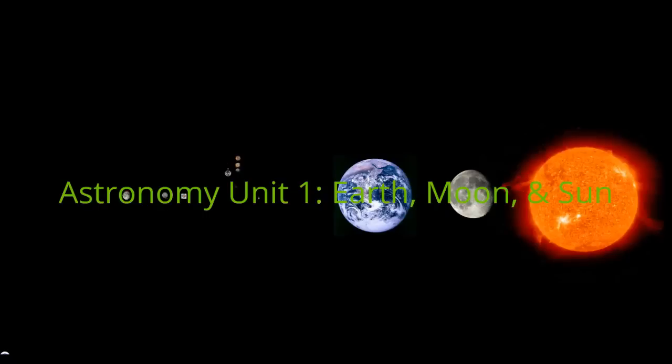Welcome to astronomy. This is the first vodcast of unit one. Unit one is going to be covering Earth, the moon, and the sun. We're going to be looking at things about how they move relative to one another, how they affect each other, and things like the features on the moon.